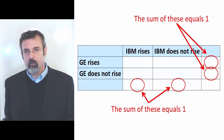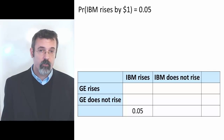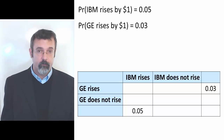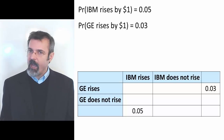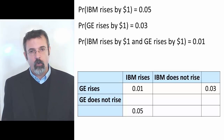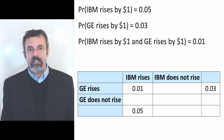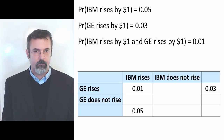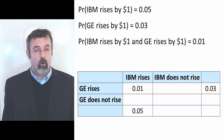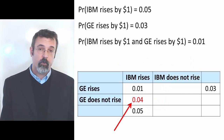Let's fill in the probability table with the information we have. First, we know that the probability of IBM stock rising is 5% — this is a marginal probability and it goes in the bottom margin of the table. The probability of both IBM and GE rising by a dollar is 1% — this is a joint probability, and it goes in the body of the table in the cell corresponding to both IBM and GE rising. We now have three numbers filled in. We know that adding the numbers in the body of the table vertically gives us the bottom margin, so these two cells must sum to 0.05, which means this cell has to be 0.04.